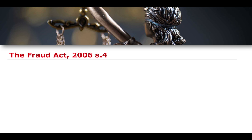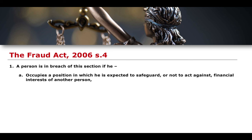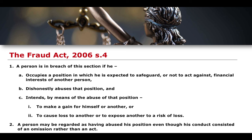We're going to start by reading through the legislation, which is Section 4 of the 2006 Fraud Act. A person is in breach of this section if he occupies a position in which he is expected to safeguard or not to act against the financial interests of another person, dishonestly abuses that position, and intends by means of that abuse to make a gain for himself or another, to cause loss to another, or to expose another to a risk of loss. A person may be regarded as having abused his position even though his conduct consisted of an omission rather than an act — so subsection two tells us that it is both act and omissions based.